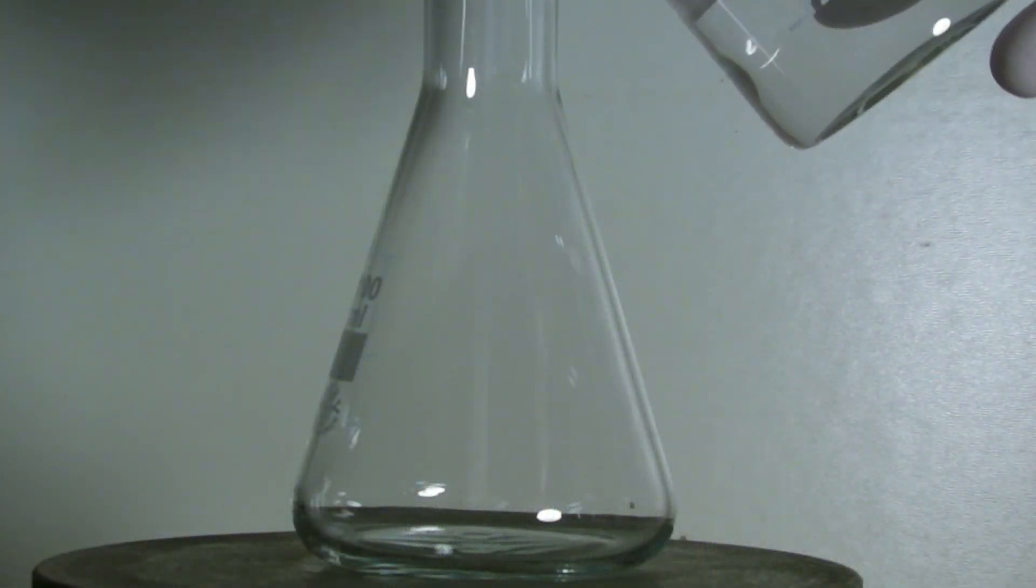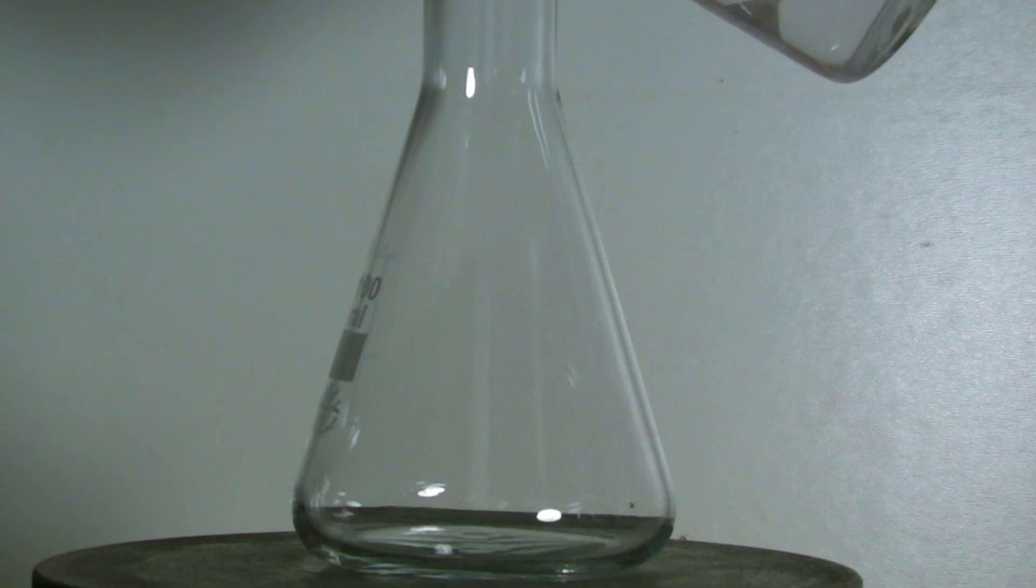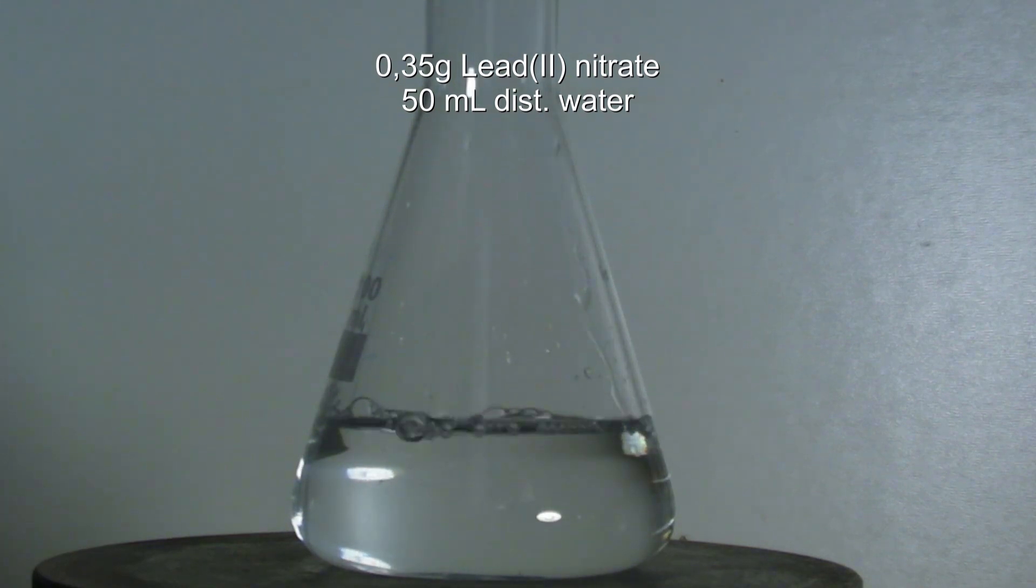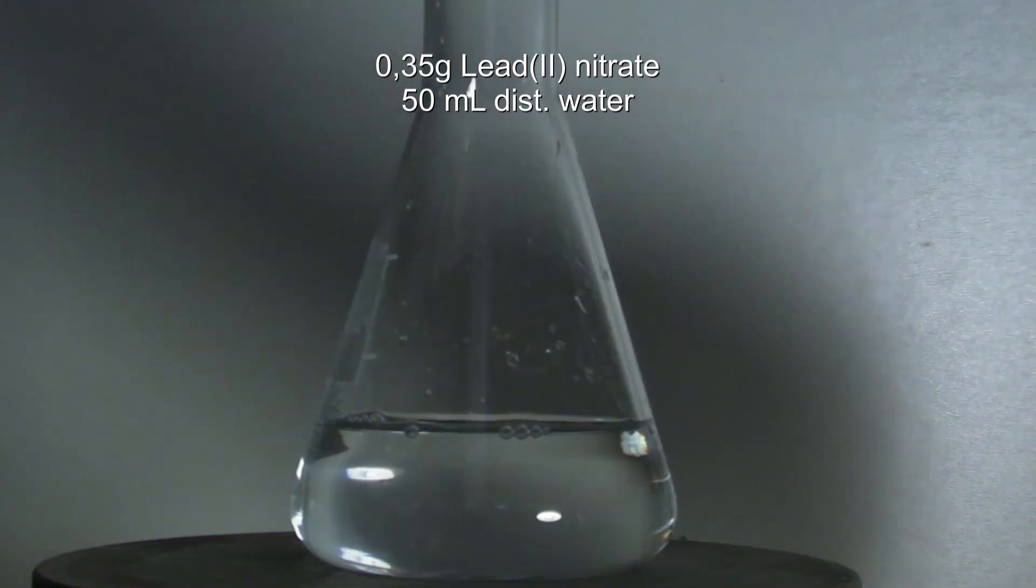To make the effect stronger, the experiment can be scaled up. For this, a solution made of 0.35 grams of lead(II) nitrate and 50 milliliters of distilled water is added to a 100 milliliter Erlenmeyer flask.